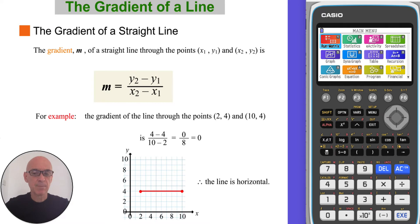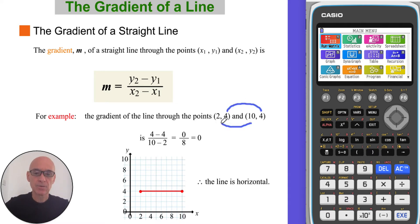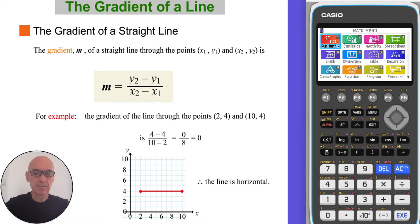In the first example, the gradient of the line through the points given is found by calculating y2 minus y1 over x2 minus x1, giving a gradient equal to 0. So the line is horizontal, as can be seen in the diagram.